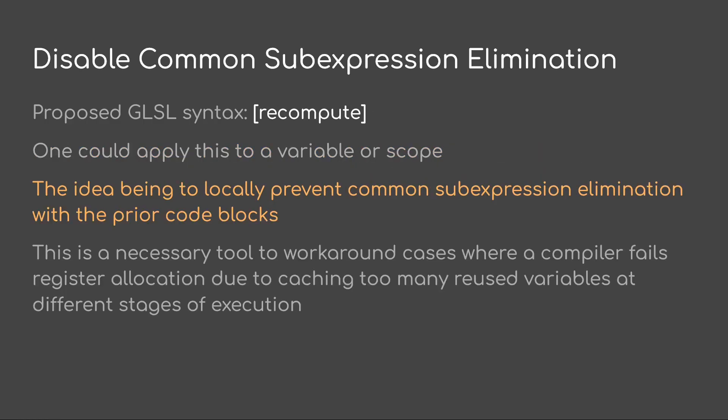Another big thing we need for register allocation — and this one is actually humongous — is the ability to disable common sub-expression elimination. I'd suggest just using [[recompute]]. We could apply this to either a variable or a scope. The idea is that you locally prevent common sub-expression elimination with prior code blocks as of the point where you're using this construct.